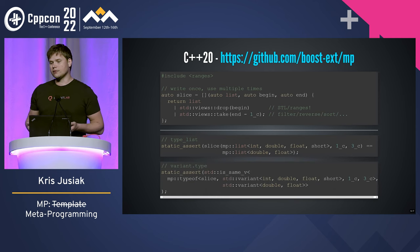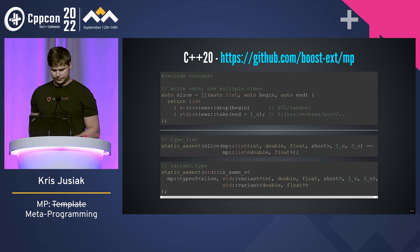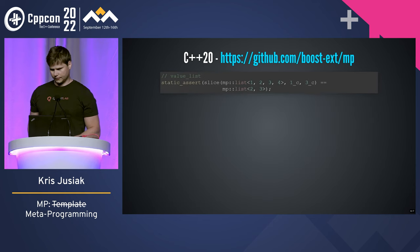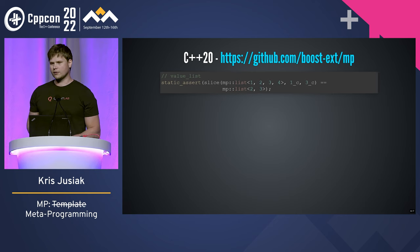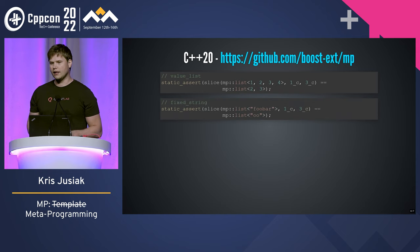We can get the type of that if you don't want to create anything — for example with variant you don't want to create an object. So we apply it, we do the type of, and we get the same result. We can do even more: we can have a value list with the same approach — 1, 2, 3, 4 — and slice it. Notice that we're still using the same function, so write it once, apply multiple times. We can do the same with a fixed string in C++20.